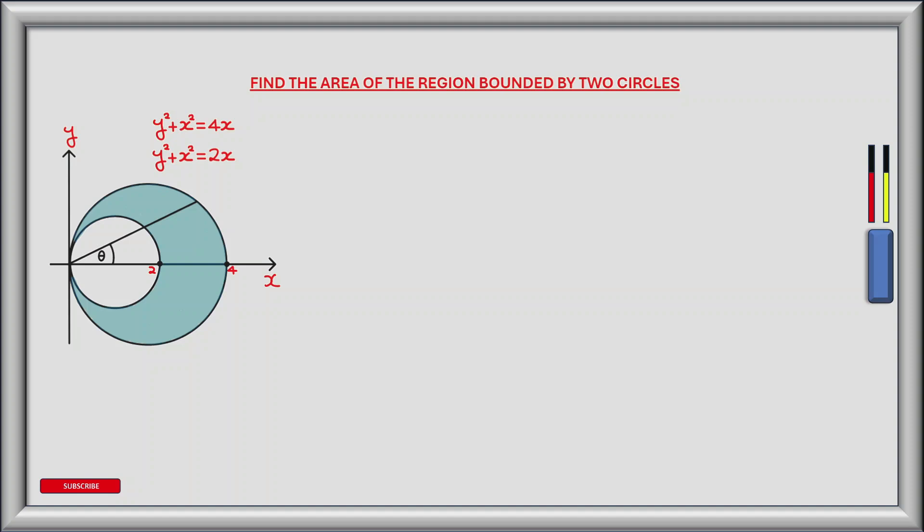To find the area of the blue shaded region we will use polar coordinates. Let's now convert the circles from Cartesian coordinates to polar coordinates, meaning converting x and y to r and theta. In our diagram, r the radial distance is the distance from the origin to the point or points of interest. Theta is the angle between the line connecting the points of interest and the origin.